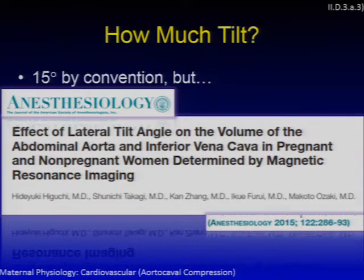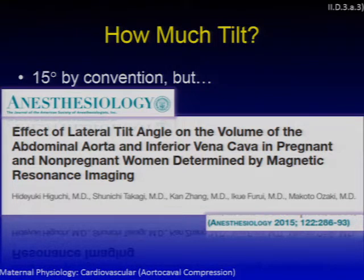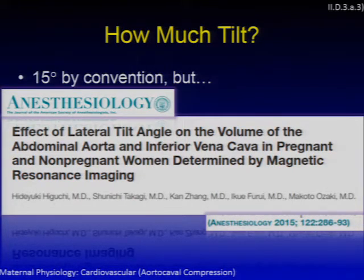While these are very interesting findings, it's important to note that this study was done in non-anesthetized women — women who hadn't had a subarachnoid block. This indicates we probably need to study this more before making good recommendations on how much tilt is needed in the context of neuraxial analgesia or anesthesia for cesarean delivery.